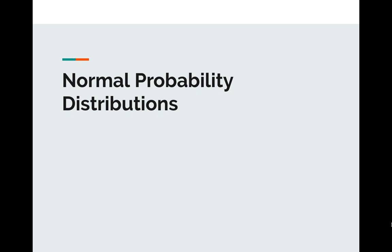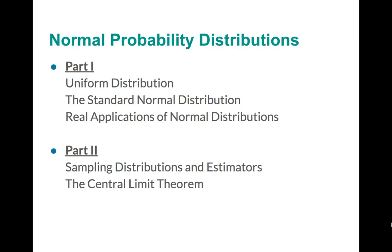Hey guys, welcome to our chapter 6 presentation. This one is going to be a two-parter because it has got some meaty subjects. Part one is going to talk about uniform distributions followed by the standard normal distributions, and then part two is going to be the sampling distributions and the central limit theorem.